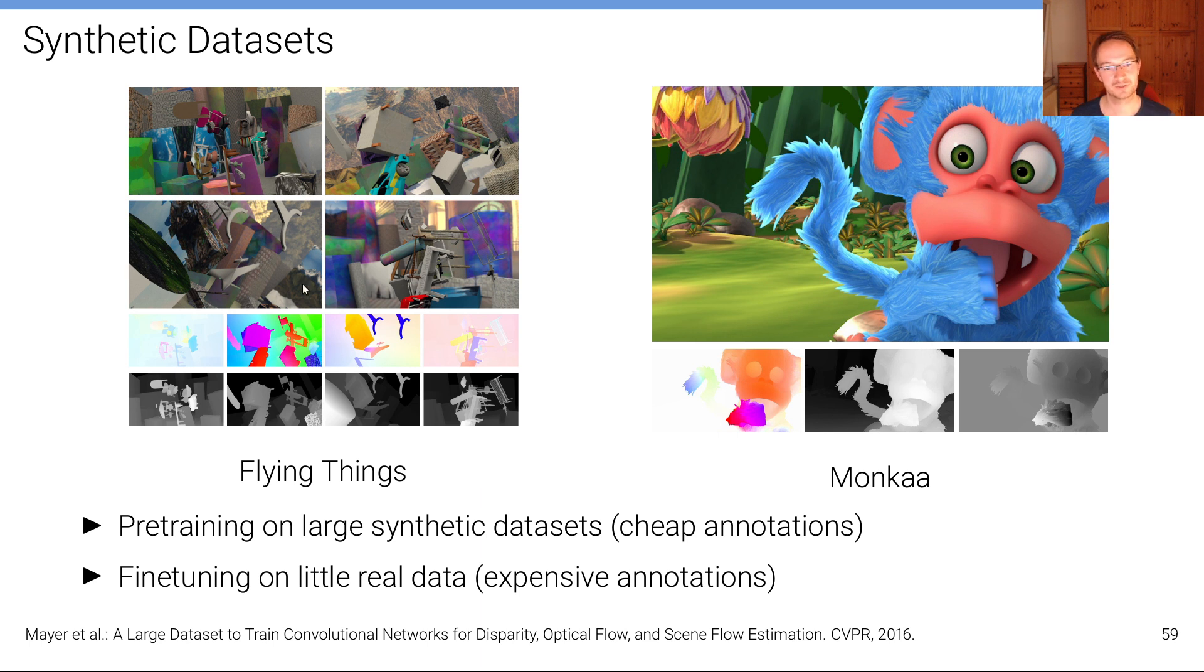these artificial datasets are large. But despite this discrepancy between the appearance of these datasets and the, for example, KITTI dataset, the performance on the target datasets was reasonably good.